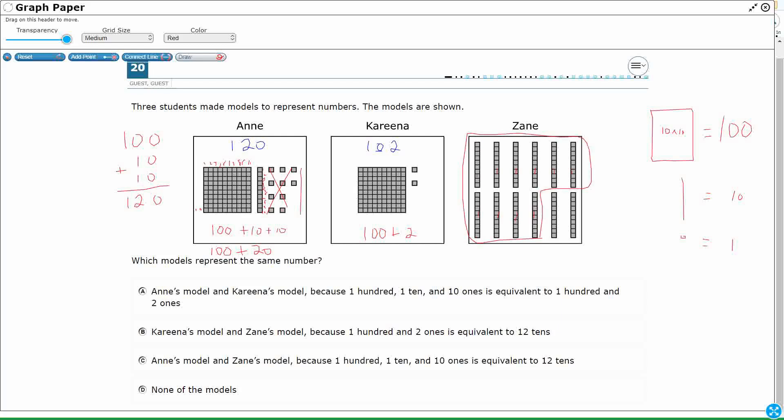So if I do that, that's 100, and then 110, 120. So that's 120. Really, what I have is 12 tens.